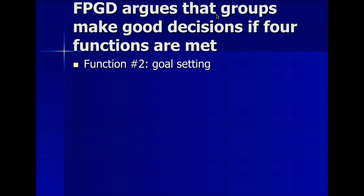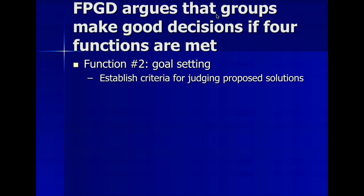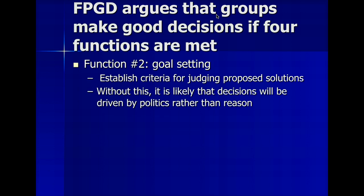Function two is goal setting — establishing criteria for a proposed solution. Once you know what it is that you're trying to tackle, you should be able to say here's how we are going to determine whether or not solutions are viable. Any suggestions that come across your desk, you're going to make sure they do A, B, and C. Why is this important? Because if you don't establish this criteria, decisions are likely to be driven by politics rather than reason — people's emotions get in the way. If everyone up front says this is what we want out of a solution, before the ideas start rolling in, you have a way to evaluate what you want before you actually even see the decisions.